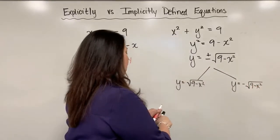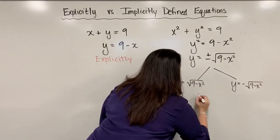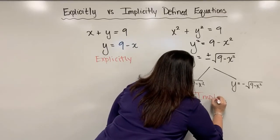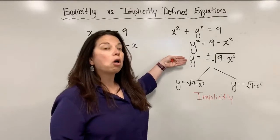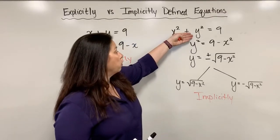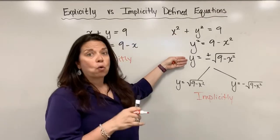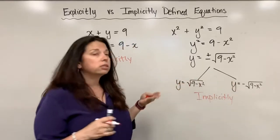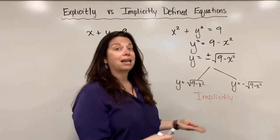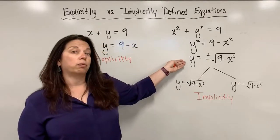So we would categorize this as an implicitly defined equation. The reason is because I'm unable to solve for the y value explicitly for an x value. I have two separate equations that are generated when I attempt to solve for y.